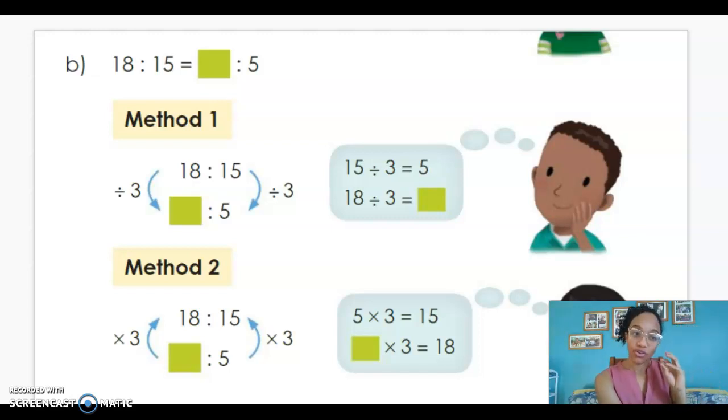We think 6 belongs in that green missing spot. But let's check with multiplication to make sure that's true. If we go from 5 to 15, we need to multiply by 3. 5 times 3 is 15. Now when we go from 6 to 18, are we also multiplying by 3? Yes. 6 times 3 is 18.